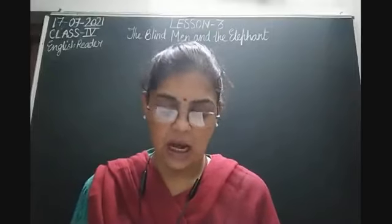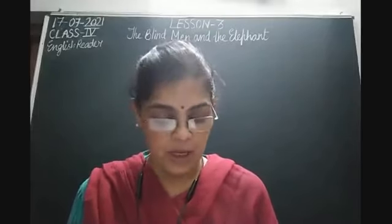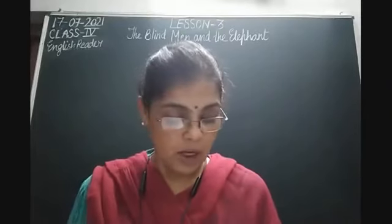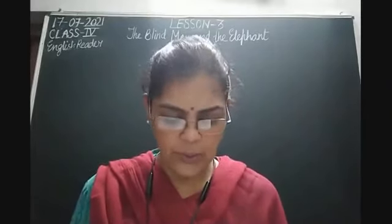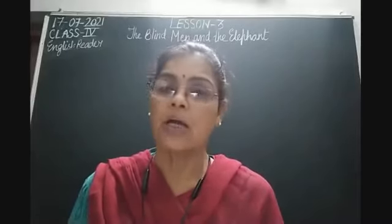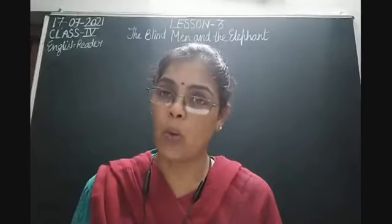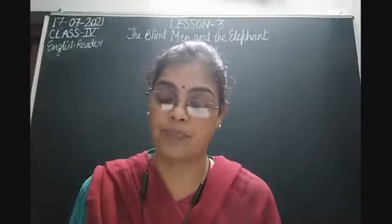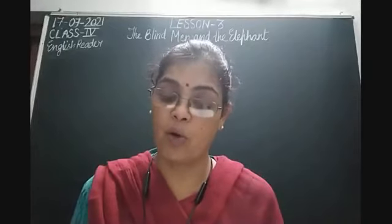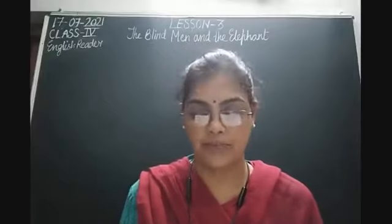The answer is: A wise man had brought the elephant to the village. The elephant's name was Gajju. Question number 2: Why weren't people afraid of the elephant? Answer: Gajju was a tame animal, so no one was afraid of him. Question number 3: What was different about the four friends? The answer is: All of them were blind.